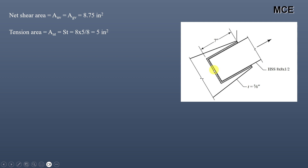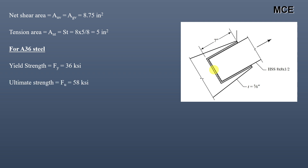The tension area equals the side of the hollow square section times the thickness of the gusset plate — since we are finding the block shear strength of the gusset plate, we use the gusset plate thickness, not the hollow square section. So it is 8 × 5/8 = 5 in². For A36 steel, the yield strength Fy = 36 ksi and ultimate strength Fu = 58 ksi.